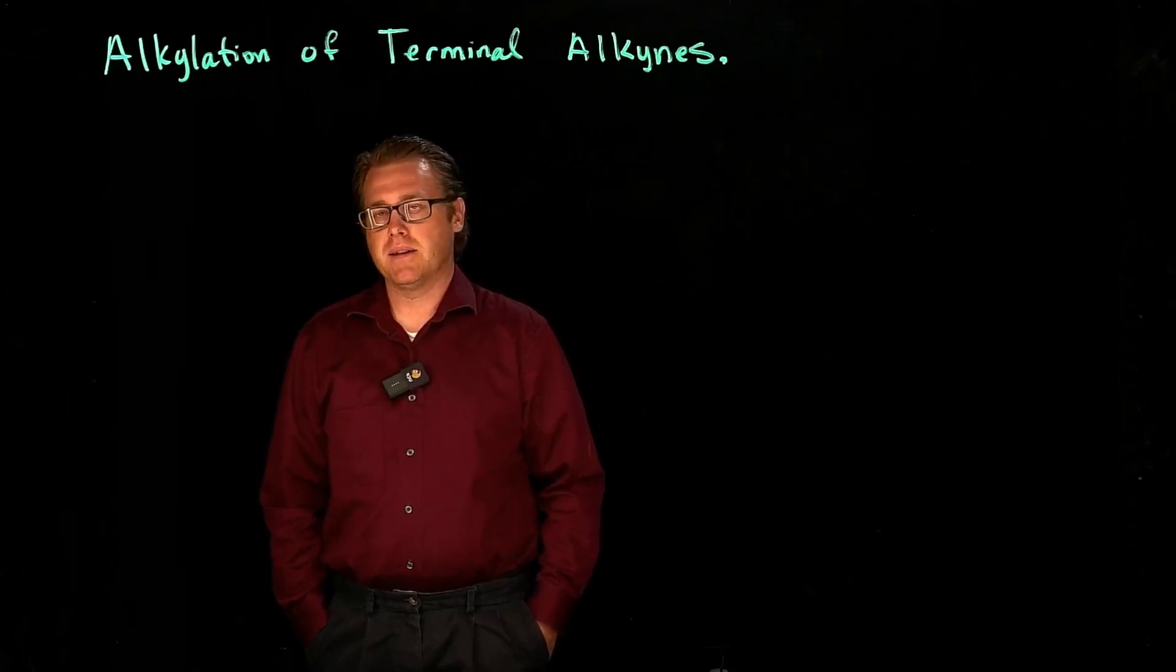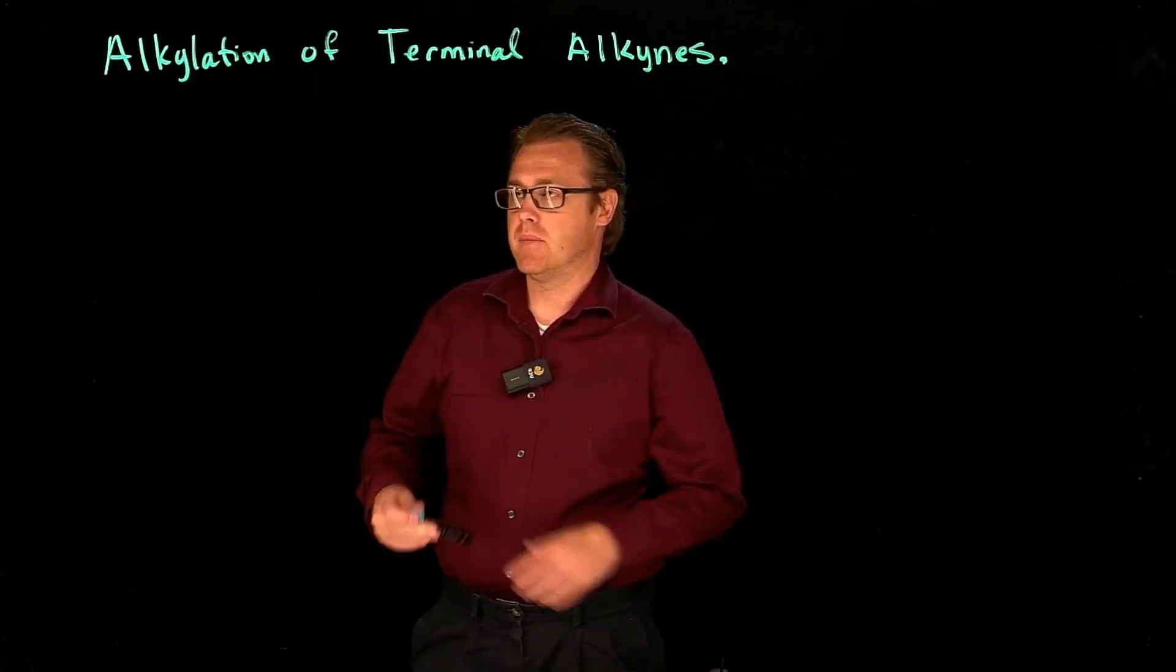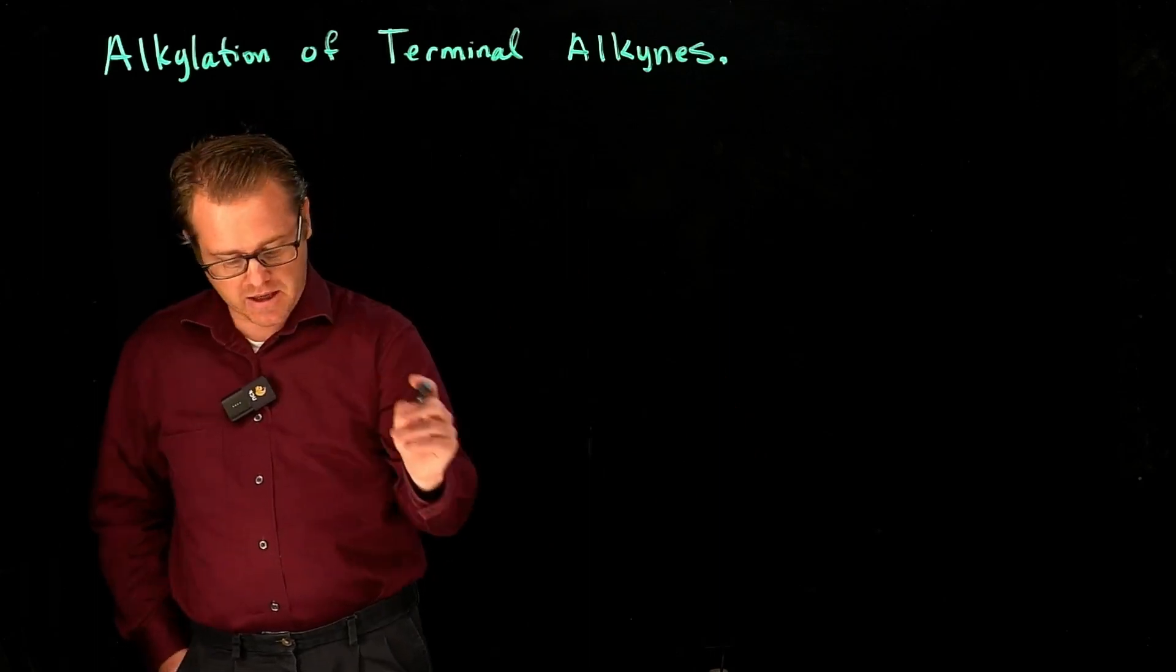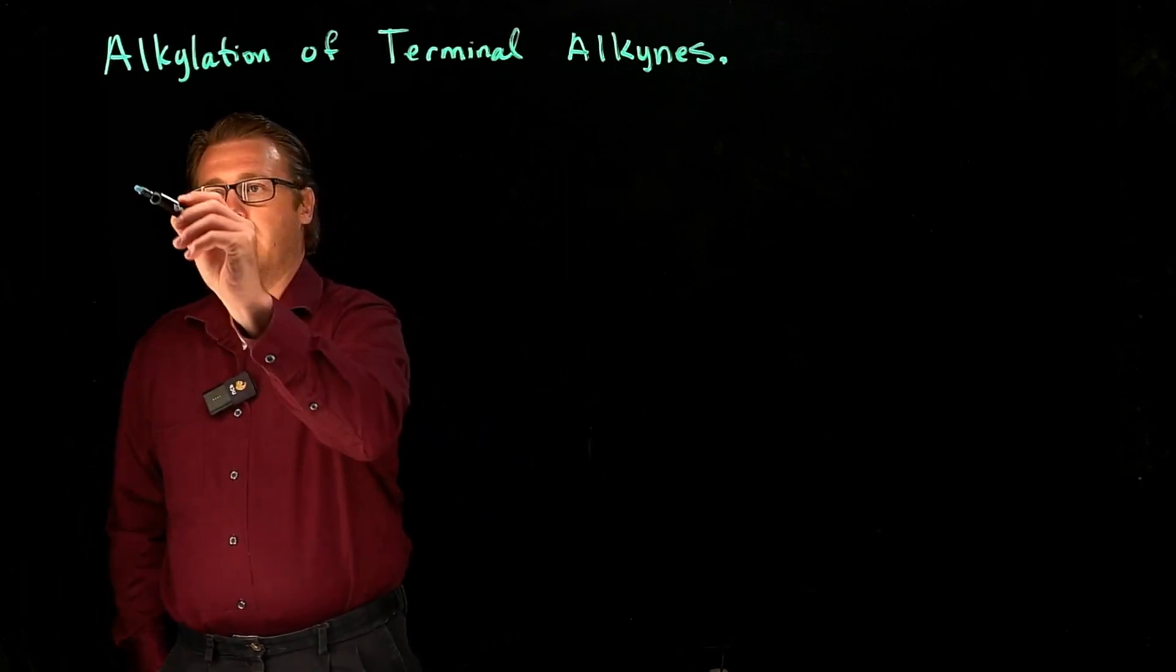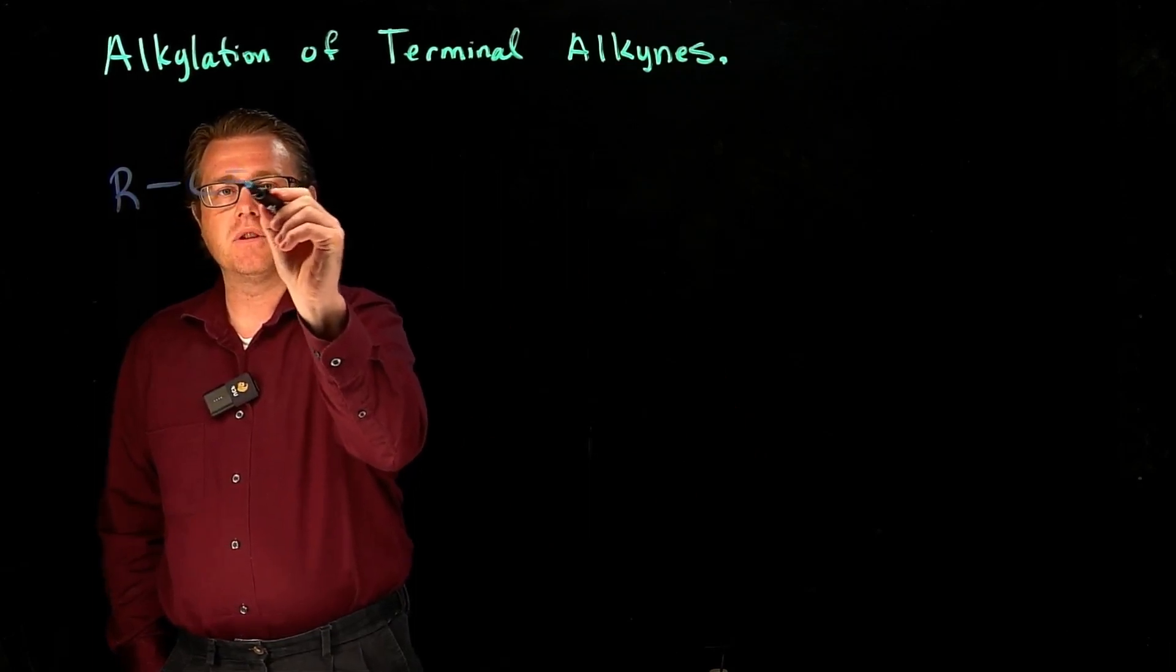Alkylation of terminal alkynes is taking an alkyne and adding carbon to it. So if we have, let's say, a generic alkyne right here, let's draw it out for this one.